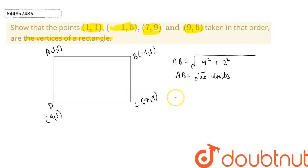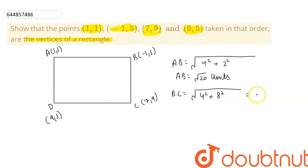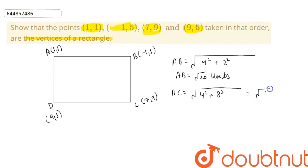Now we calculate the length BC using the distance formula. We get the square root of (9 minus 5) squared plus (7 plus 1) squared, which is the square root of 4 squared plus 8 squared, giving us the square root of 64 plus 16. So BC equals √80 units.